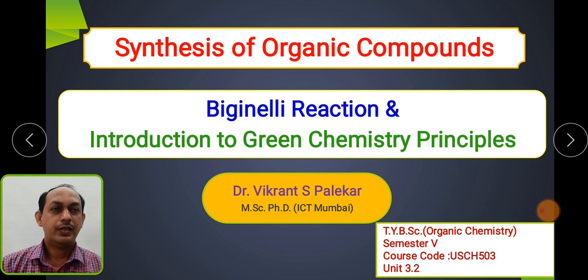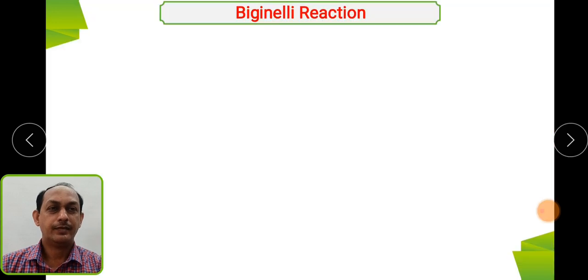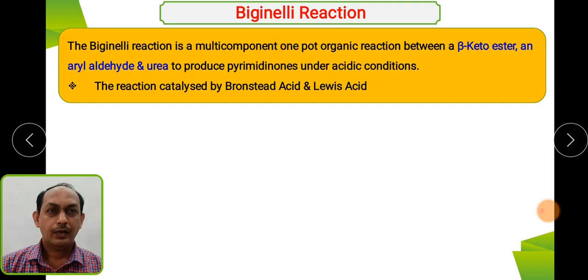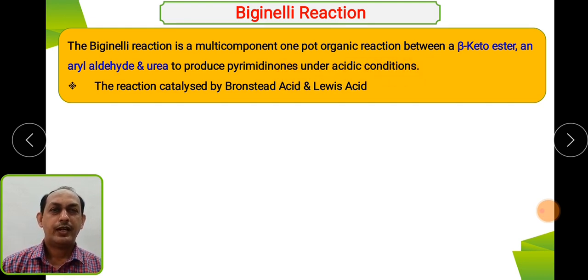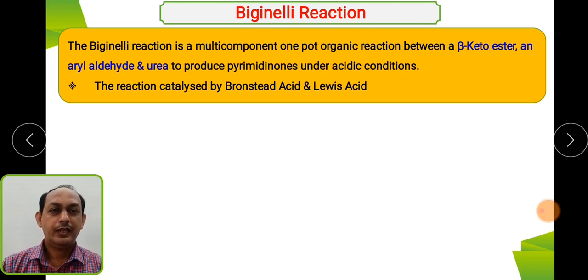In the multi-component series, we are going to see the second reaction. The first reaction we saw was the Mannich reaction, where beta-amino compounds are formed as a product. In this session, we are going to see the Biginelli reaction. Basically, the Biginelli reaction is a multi-component reaction which occurs in one pot where three components react together.